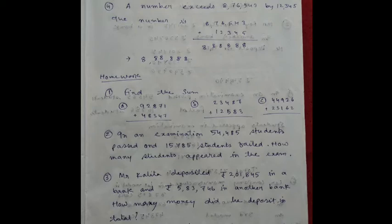Number 2: In an examination, 54,485 students passed and 15,785 students failed. How many students appeared in the exam? Mr. Kalita deposited rupees 2 lakh 1,845 in a bank and rupees 5 lakh 83,746 in another bank. How much money did he deposit in total?